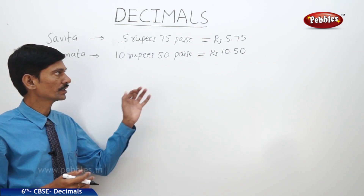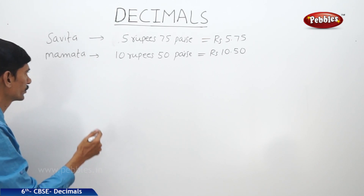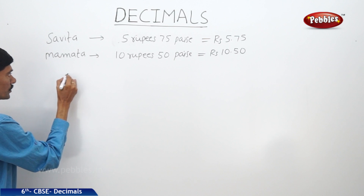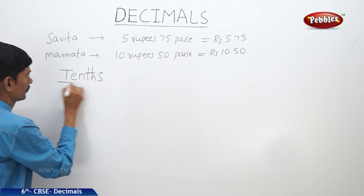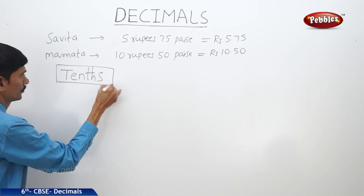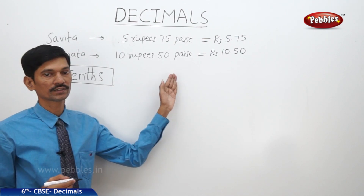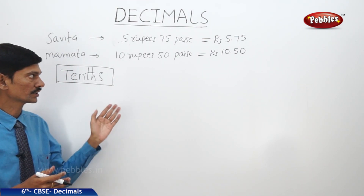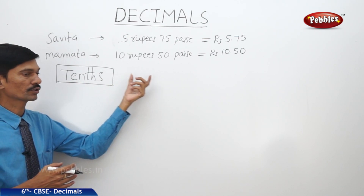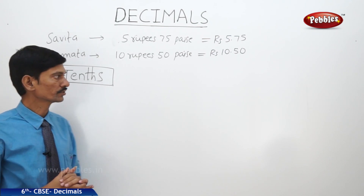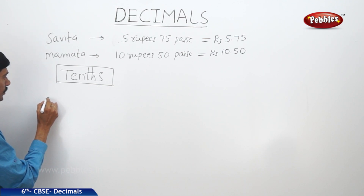There are many situations where we use decimals in our day-to-day life. Now let us learn about the first decimal part, that is tenths. We know the place values as ones, tens, hundreds, thousands, and so on. Similarly, we can extend this to tenths, hundredths, thousandths, and so on. First, let us learn about the tenths with an example: Roger has a pencil of a certain length.